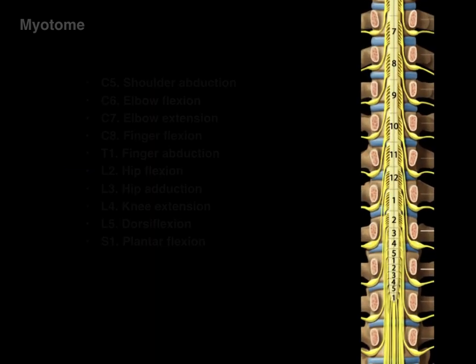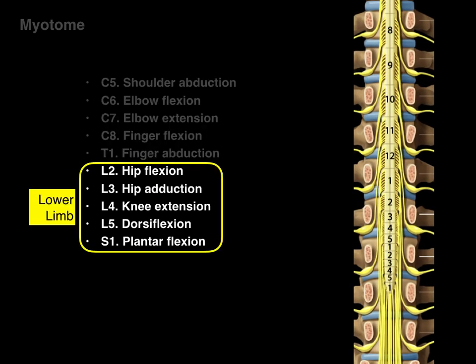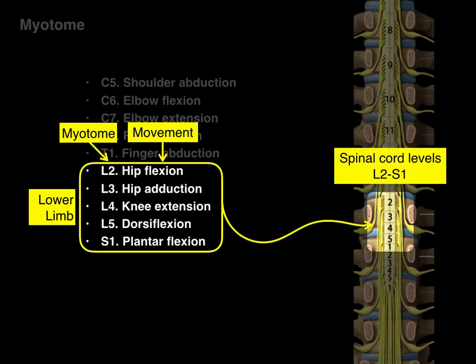Now let's take a look at the lower limb. Each of these five lower limb segments have five lower limb myotomes, five associated movements, and five spinal cord levels associated with them.